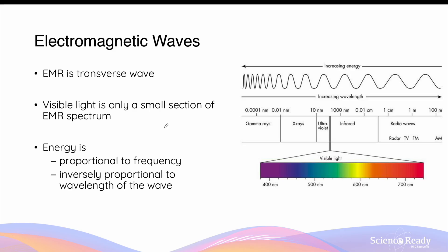By way of review, electromagnetic waves are transverse waves that exist on a spectrum of various wavelengths and frequencies. Visible light is only a small part of the entire spectrum whose wavelengths are visible to our eyes. The energy of an electromagnetic wave is proportional to its frequency — the higher the frequency, the higher the amount of energy that the wave contains. It is inversely proportional to the wavelength of the wave, so the longer the wavelength, the smaller the amount of energy.